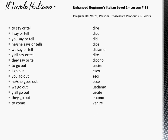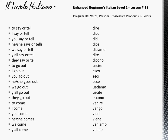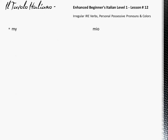To come: Venire. Venire. I come: Vengo. Vengo. You come: Vieni. Vieni. He or she comes: Viene. Viene. Viene. Y'all come: Venite. They come: Vengono. Vengono. Vengono.